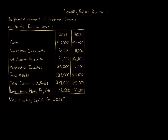Cash 20x9: $48,500. Cash 20x8: $44,000. Short-term investments 20x9: $28,000. Short-term investments 20x8: $11,000. Net account receivable 20x9: $99,000. Net account receivable 20x8: $102,000. Merchandise inventory 20x9: $166,000. Merchandise inventory 20x8: $144,000. Total assets 20x9: $529,000. Total assets 20x8: $544,000. Total current liabilities 20x9: $269,000. Total current liabilities 20x8: $290,000. Long-term note payable 20x9: $56,000. Long-term note payable 20x8: $55,000.